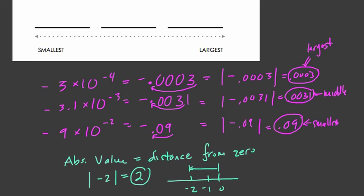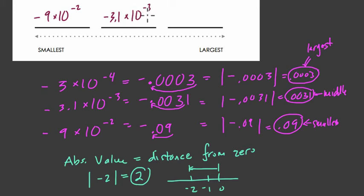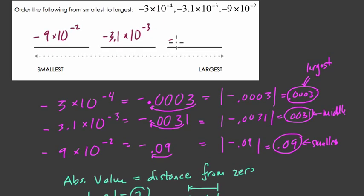So let's write this down. Our smallest number is negative 9 times 10 to the negative 2nd, followed by negative 3.1 times 10 to the negative 3rd. And the largest number is negative 3 times 10 to the negative 4th.